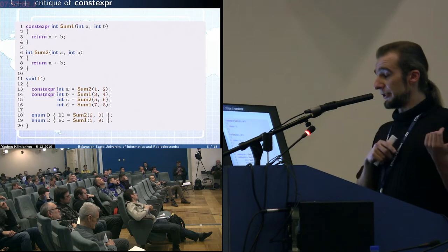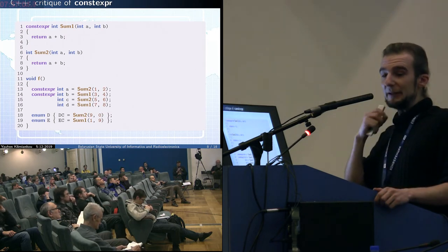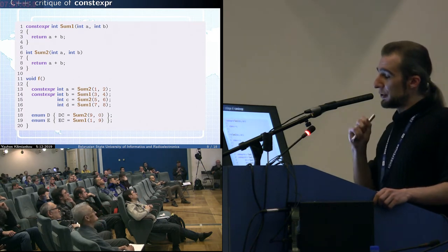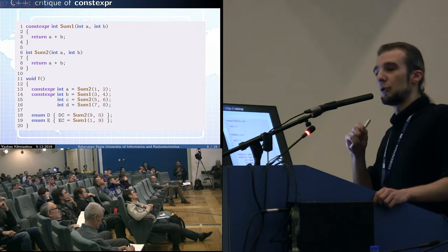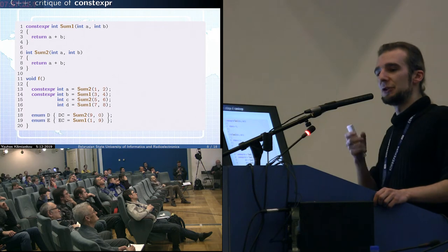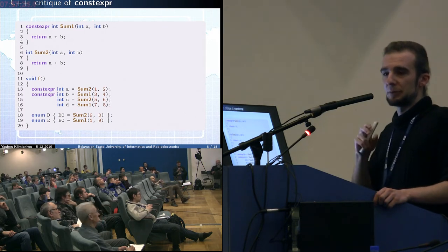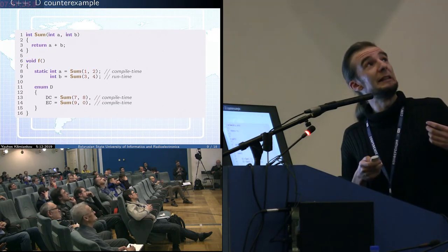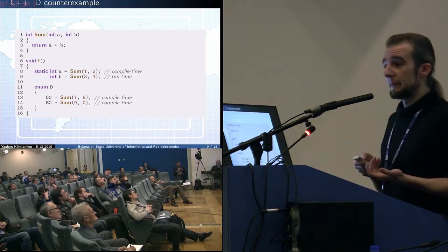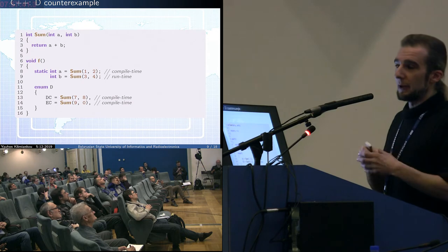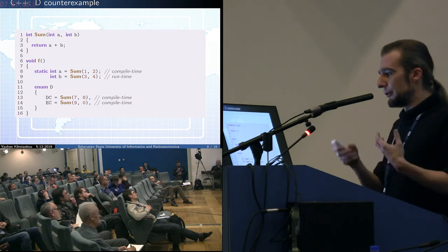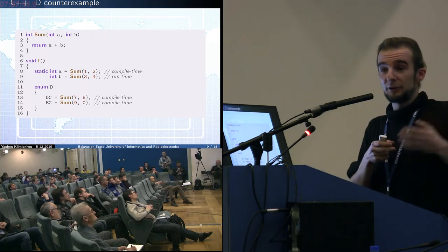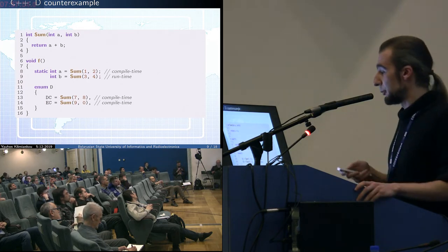Another scenario at lines 18–19: there can be some justification for constexpr introduction when CTFE is used for code generation — the compiler must calculate the value and embed it in the generated code. But here is a counterexample: the same code in D language, where the compiler calculates everything automatically. In D language, there is no analog of constexpr, and there is nothing similar. When a function is used for code generation and the compiler cannot calculate it, it simply stops and says it cannot calculate — check the code.